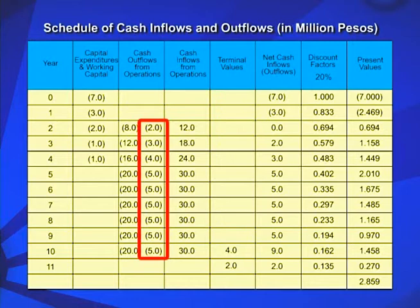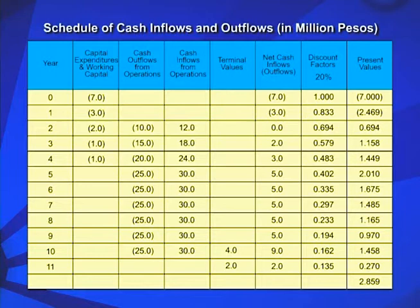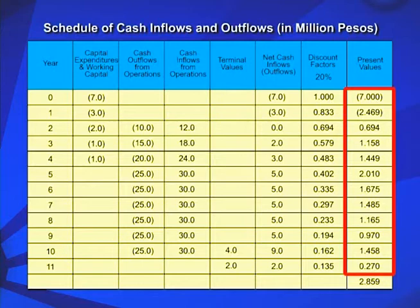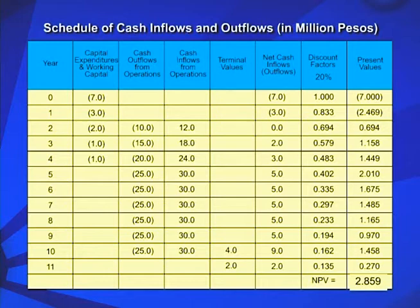Terminal cash inflows include the recovery of the entire working capital of 4 million pesos in year 10 and the sale of fixed assets for 2 million pesos in year 11. The cash inflows and outflows are summarized herein. The net present value, or NPV, is computed using a 20% discount rate. Examining the schedule of cash inflows and outflows, we arrive at a net present value of 2,859,000 pesos at the end of the project life, meaning our return is actually higher than 20% since the NPV is greater than zero.